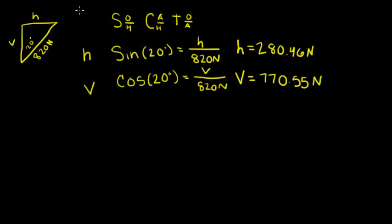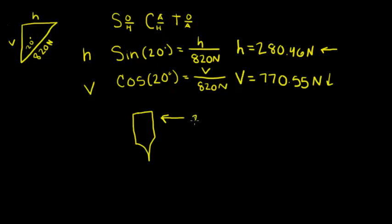Because the total force was downward and towards the left, this horizontal force is to the left. For the vertical force, since this vector is downward, the vertical component will also be downward. These are almost like individual forces on the crutch. Let's draw a picture to make this easier. We have a horizontal force of 280.46 newtons, a downward force of 770.55 newtons, and from the problem, a 420 newton force coming up from the bottom.